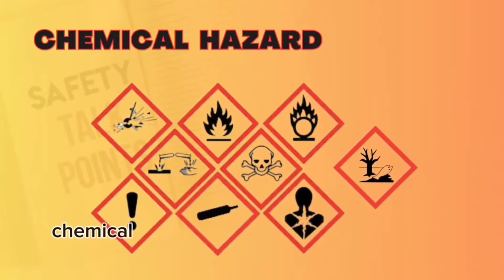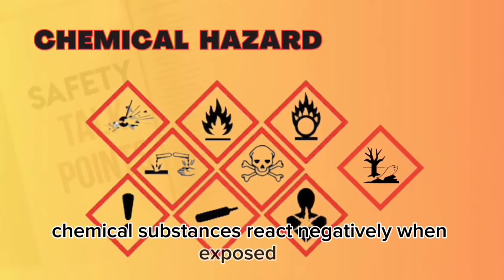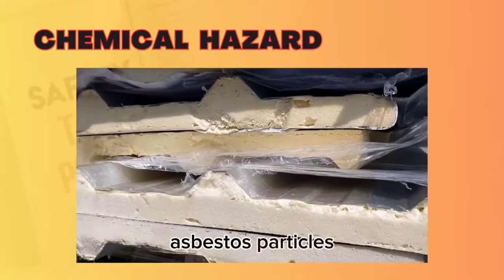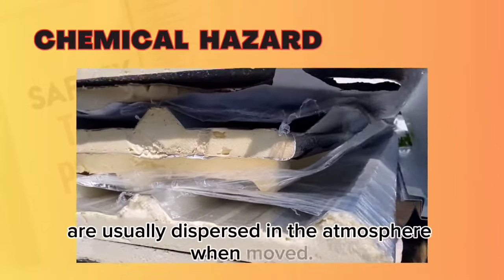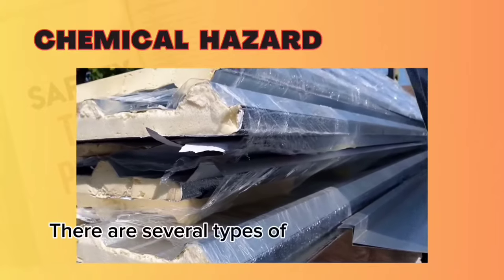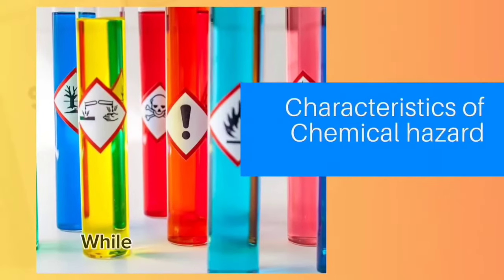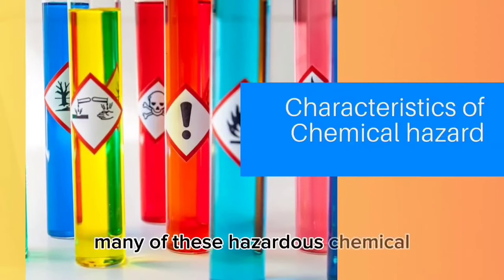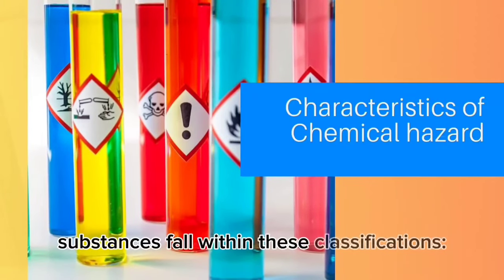Often, chemical substances react negatively when exposed to or mixed with other materials or chemical substances. For instance, asbestos particles are usually dispersed in the atmosphere when moved. There are several types of chemical hazards in the workplace. While there are several classifications for these chemical hazards, many of these hazardous chemical substances fall within these classifications.